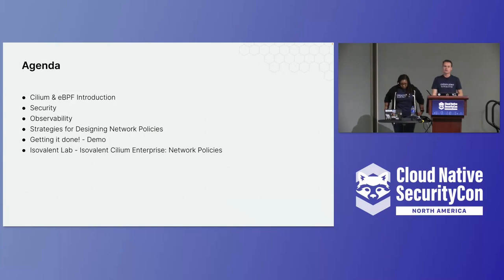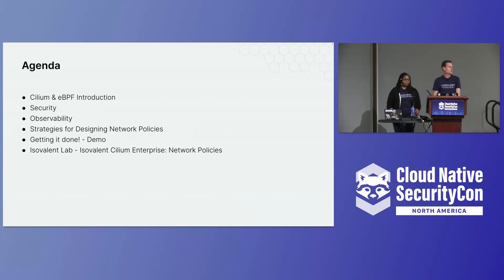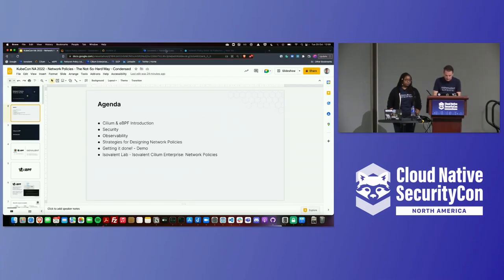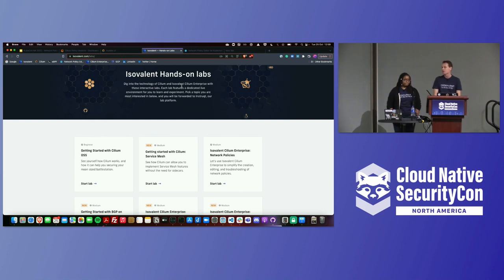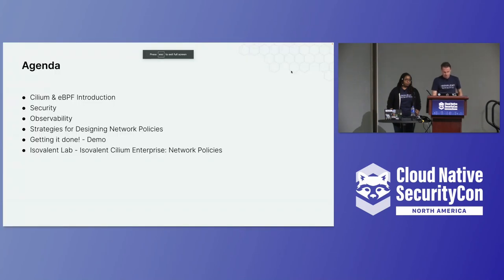The agenda: first we'll talk about Cilium and eBPF as an introduction, then security and observability features, strategies for designing network policies, a short demo using Hubble UI, and then we'll dive into the lab with Tracy. I'd like you to go to isovalent.com/labs and start the Getting Started with Cilium OSS lab — it takes a few minutes to provision on kind-based clusters, so please start it now.